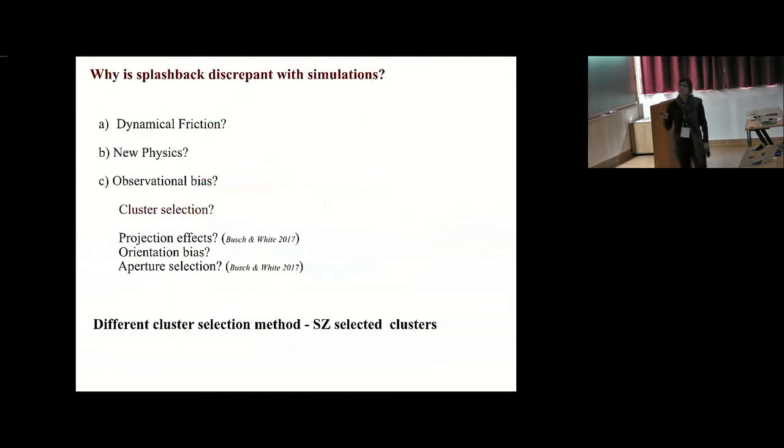We wanted to probe why the splashback radius is discrepant from simulations. There could be several reasons. We looked at dynamical friction. Could it be new physics? But more likely than not, it is some sort of an observational bias, especially because we are using red mapper clusters, which suffer from projection effects, orientation effects. These red mapper clusters may be more oriented, the major axis may be oriented towards us. And other effects like aperture selection, because you are already choosing an aperture to define the mass of these clusters, you might be introducing a feature in your profile.